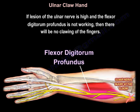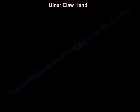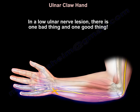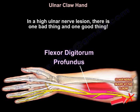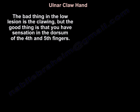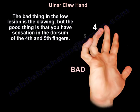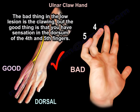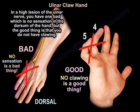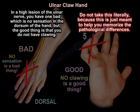If the lesion of the ulnar nerve is high and the flexor digitorum profundus is not working, then there will be no clawing of the fingers. In a low ulnar nerve lesion, there is one bad thing and one good thing: the bad thing is the clawing, but the good thing is you have sensation in the dorsum of the fourth and fifth fingers. In a high lesion, you have no sensation in the dorsum of the hand, but the good thing is you don't have clawing. This is just to help you memorize the pathological differences.